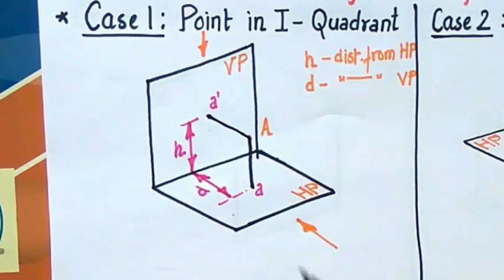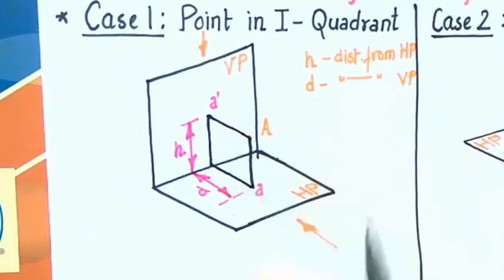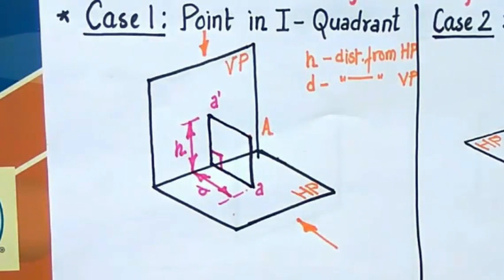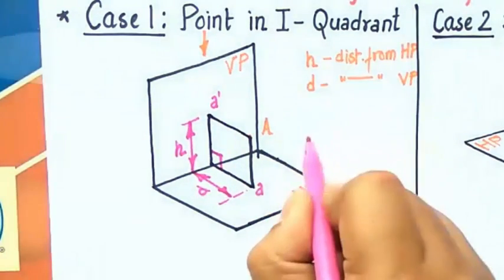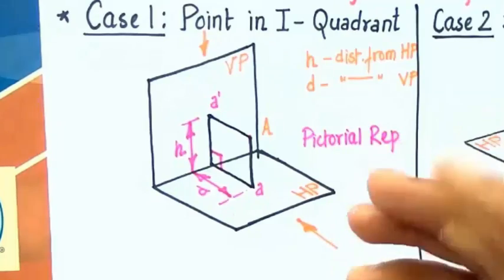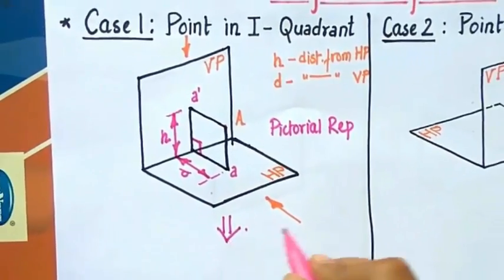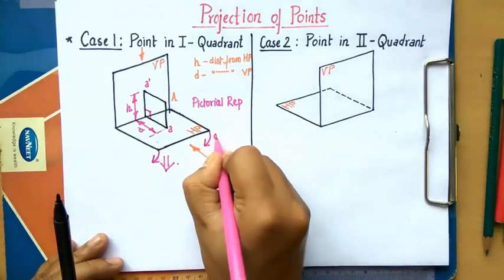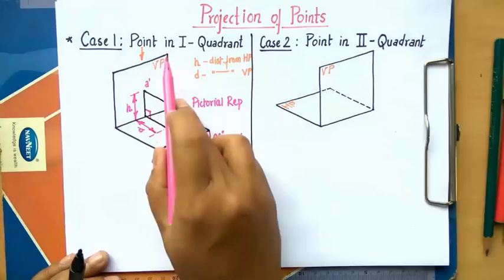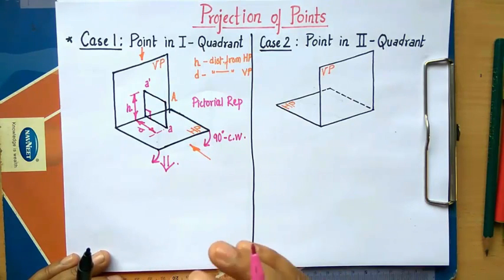The next thing I'll be doing is joining this front view with the top view with the help of a projector line. You can clearly see that since it's an orthographic view, this angle is going to be 90 degrees. Our objective is to convert this pictorial representation into an orthographic view. To do so, we're going to rotate this horizontal plane by an angle of 90 degrees clockwise, so that the vertical plane and horizontal plane become coplanar and can be drawn on a drawing sheet.